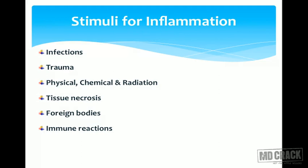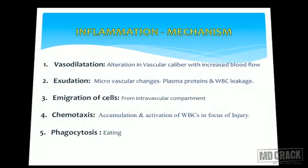Any infectious agents — bacterial, fungal, viral — can elicit the inflammatory process. Physical trauma, chemical trauma, chemical agents, and road traffic accidents can all trigger inflammation. Physical agents, chemical agents, and even radiation can start the inflammatory process. Tissue necrosis can itself elicit an inflammatory response. Foreign bodies entering the body can also elicit a granulomatous response — foreign body granulomatous response is itself a type of inflammatory response. Immune reactions are also an important trigger for the onset of the inflammatory process.